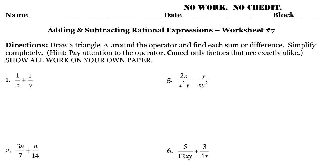So practice this. We have two worksheets, worksheet seven and worksheet eight. Both deal with this concept, so we're going to work through the odd problems on these two worksheets. Looking at number one on worksheet seven, we have one over x plus one over y. Unlike when we have common denominators, we can't just add these together — x and y don't match, so they're not ready to go.